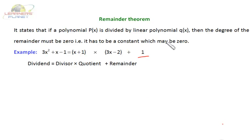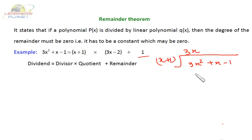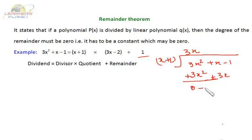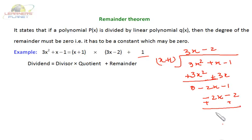Let's do a quick recap. I divide 3x² + x - 1 by (x + 1). Performing the long division: 3x² + x - 1 divided by (x + 1) gives quotient 3x - 2, and finally I get 1 as the remainder. That means the dividend equals divisor times quotient plus remainder. Here I'm getting the remainder as 1.